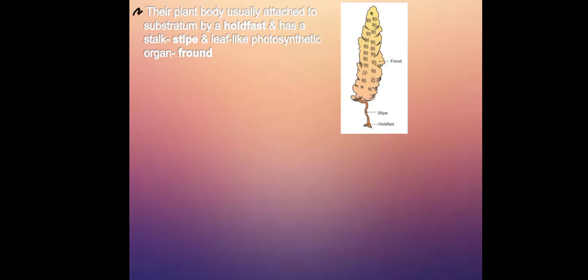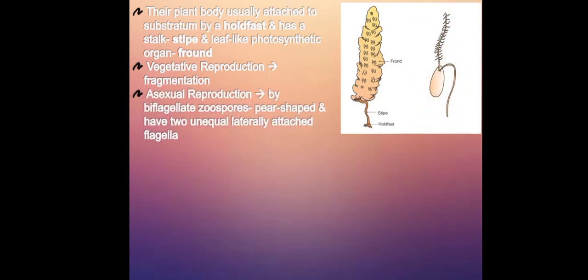Their plant body is usually attached to a substratum by a holdfast and has a stalk which is stipe, and a leaf-like photosynthetic organ that is frond. The frond and the stipe, these two structures are attached by a holdfast. Their vegetative reproduction is done by fragmentation.